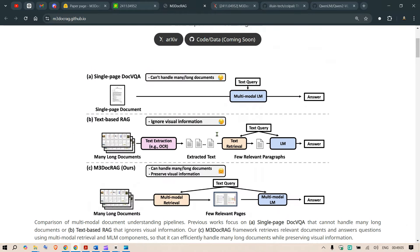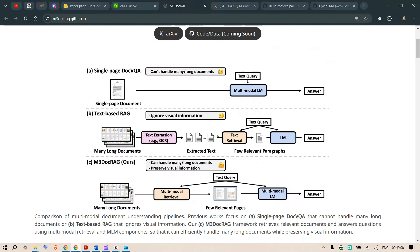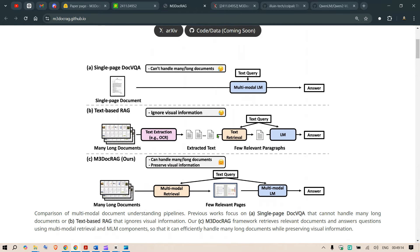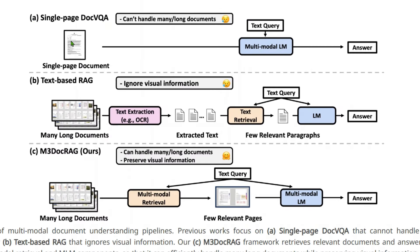Let's go back to the top and look at the different things they're explaining. We have single-page document visual question answering, where we pass a single page through a multi-modal LLM with a text query from the user, and it returns an answer. Of course, single-page Doc VQA cannot handle many long documents. That's where the RAG system we've been discussing comes in — we have many documents extracted using OCR.